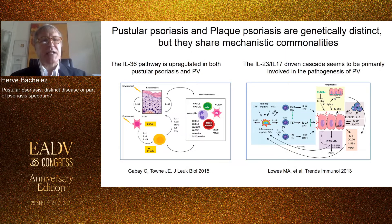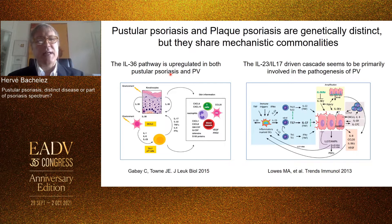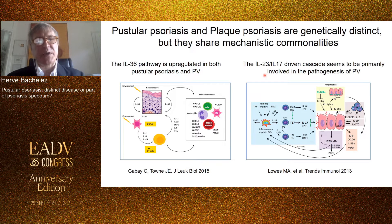We can say without doubt that IL-36 is deregulated in both pustular psoriasis and psoriasis vulgaris. Probably what is different is the positioning in the hierarchy of the inflammatory cascade between the two. In pustular psoriasis, the IL-36 pathway deregulation is a very primary, driving, and major genetic event resulting from a genetic abnormality, while the IL-23/IL-17-driven cascade remains the mainstay of the pathogenesis of psoriasis vulgaris at the population level, even though IL-36 is also deregulated in this setting.